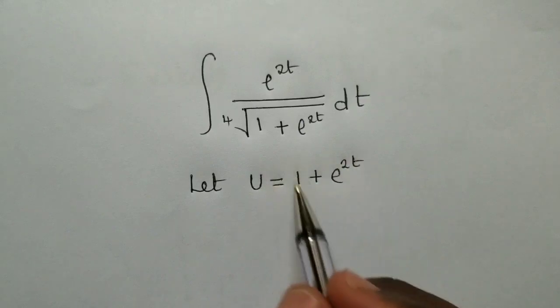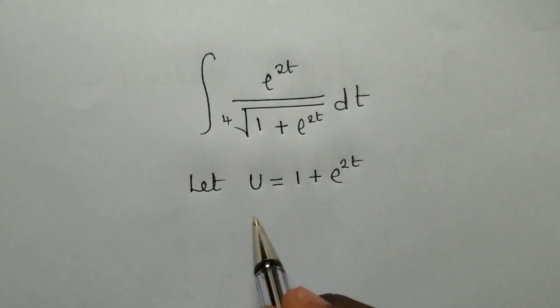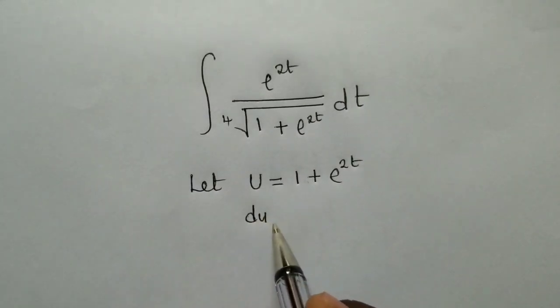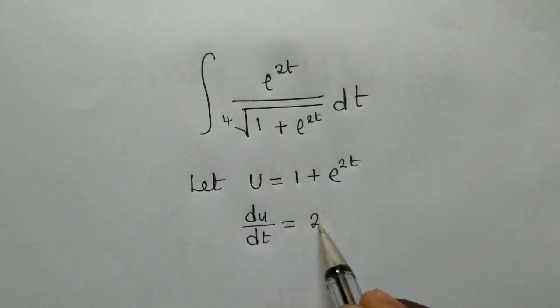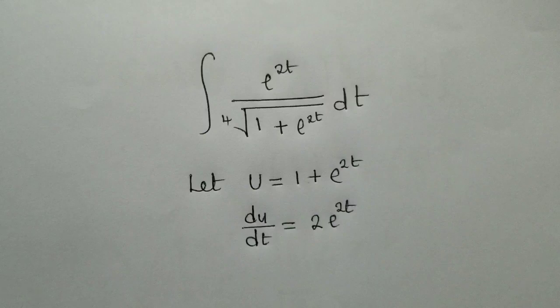The next thing, we differentiate this with respect to t. So we're going to find du dt, which will just give us a 2 e power 2t.